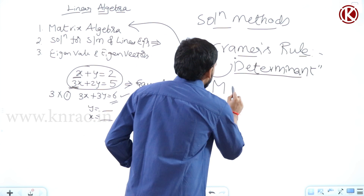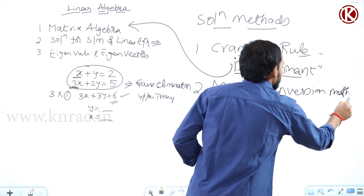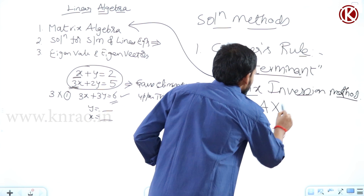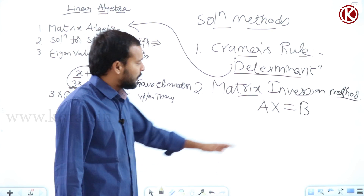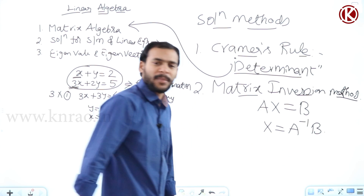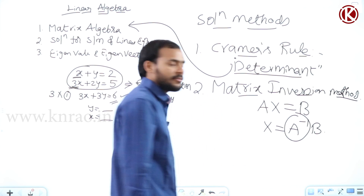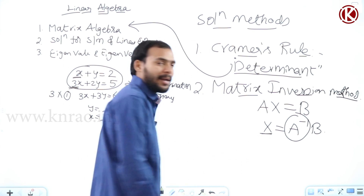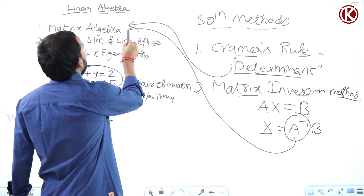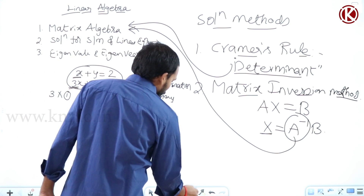The next method is the matrix inversion method. In this method, the system of linear equations is modeled in the form AX equals B. Our objective is to find X, which equals A-inverse times B. So we need to find the inverse of matrix A, and for that we again need knowledge of matrix algebra.